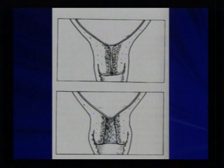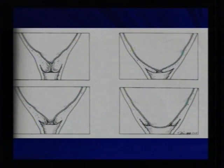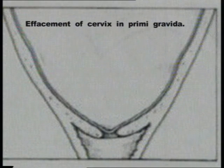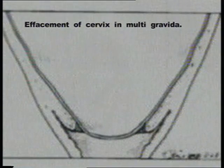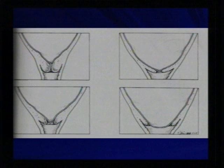Dilatation of the cervix progresses as labour progresses from 1 cm to 10 cm. The cervix is called fully dilated once it reaches about 10 cm — the external os has opened sufficiently for the passage of a full-grown baby's head, which measures 9.5 cm at the biparietal transverse diameter, and the suboccipitobregmatic diameter of a fully flexed head is also around 9.4 cm. In a primigravida, effacement occurs first and then dilatation follows. In a multigravida, effacement and dilatation may occur simultaneously. The picture on the right shows the cervix nearly fully effaced, with the entire length incorporated into the lower uterine segment, followed by opening of the external os.